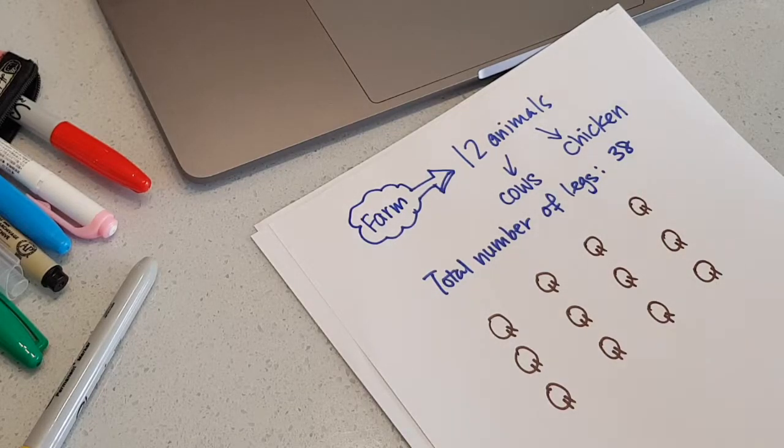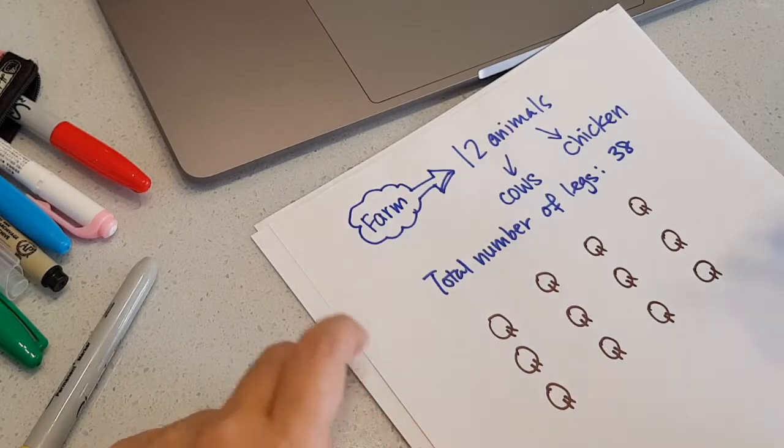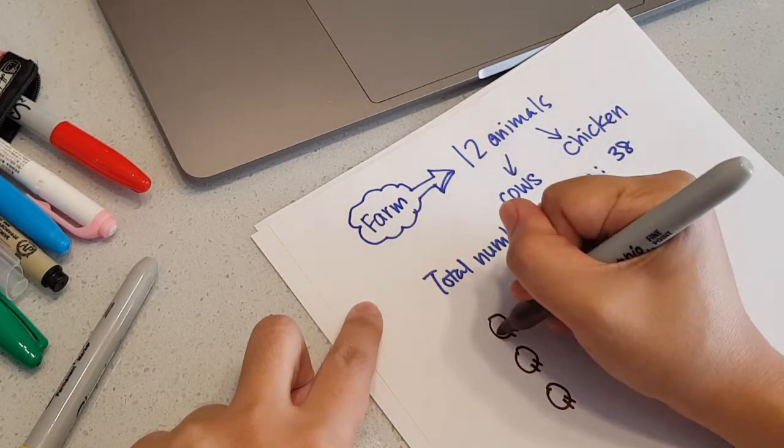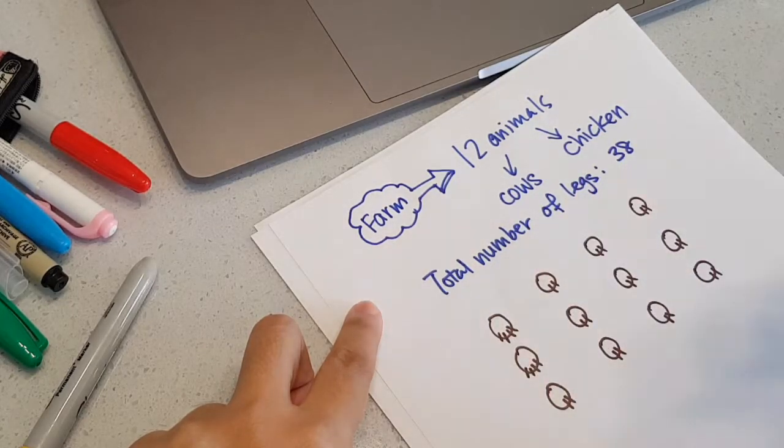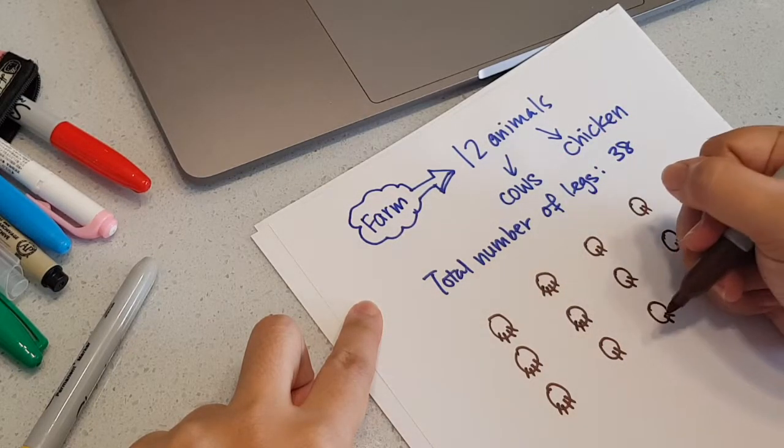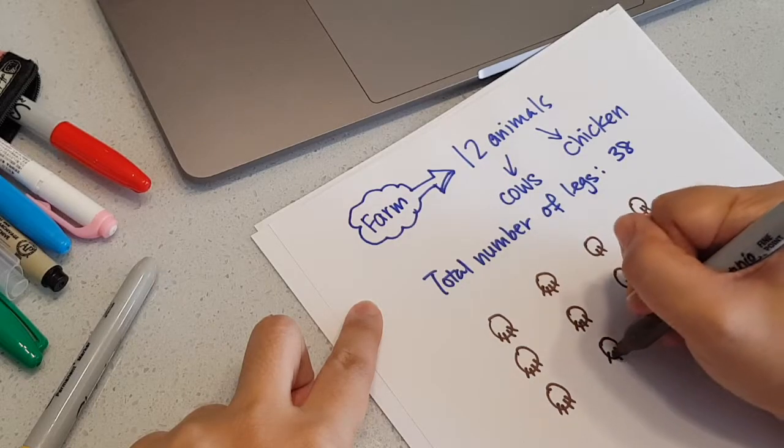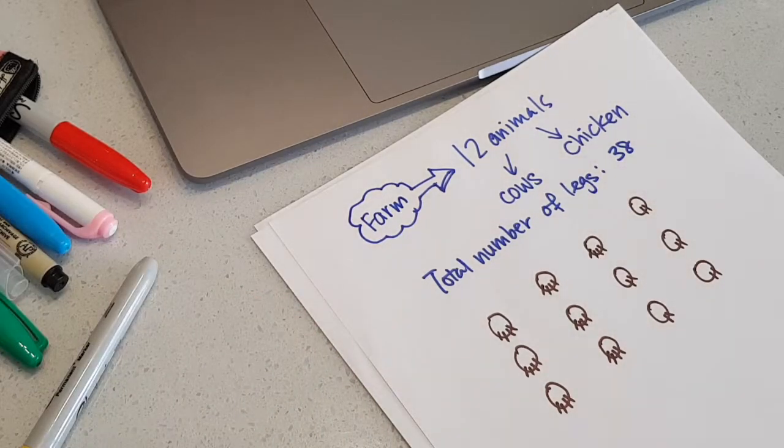So after 24, I need to draw two on each to make it count. 24, 25, 26, 27, 28, 29, 30, 31, 32, 33, 34, 35, 36, 37, 38. Now I have 38.